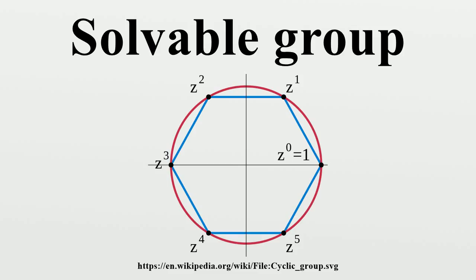Generalizing this argument, coupled with the fact that An is a normal, maximal, non-abelian simple subgroup of Sn for n greater than 4, we see that Sn is not solvable for n greater than 4. This is a key step in the proof that for every n greater than 4 there are polynomials of degree n which are not solvable by radicals. This property is also used in complexity theory in the proof of Barrington's theorem.